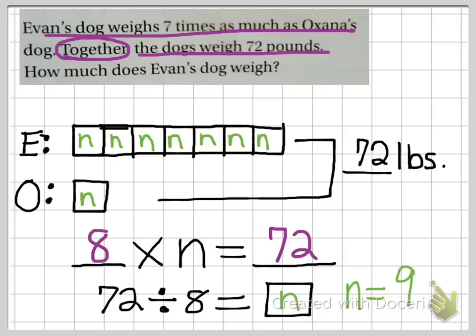Now, how is that going to help us with knowing how much Evan's dog weighs? Does Evan's dog weigh nine pounds? Absolutely not. Evan's dog is over here. The eight copies of N, and if N is nine, and there's seven copies, there's seven copies of N for Evan's dog. That's seven times nine, which means Evan's dog is 63 pounds. Of course, if I had room on this page, I would have a response statement: Evan's dog weighs 63 pounds. That's the question we were asked in this problem.